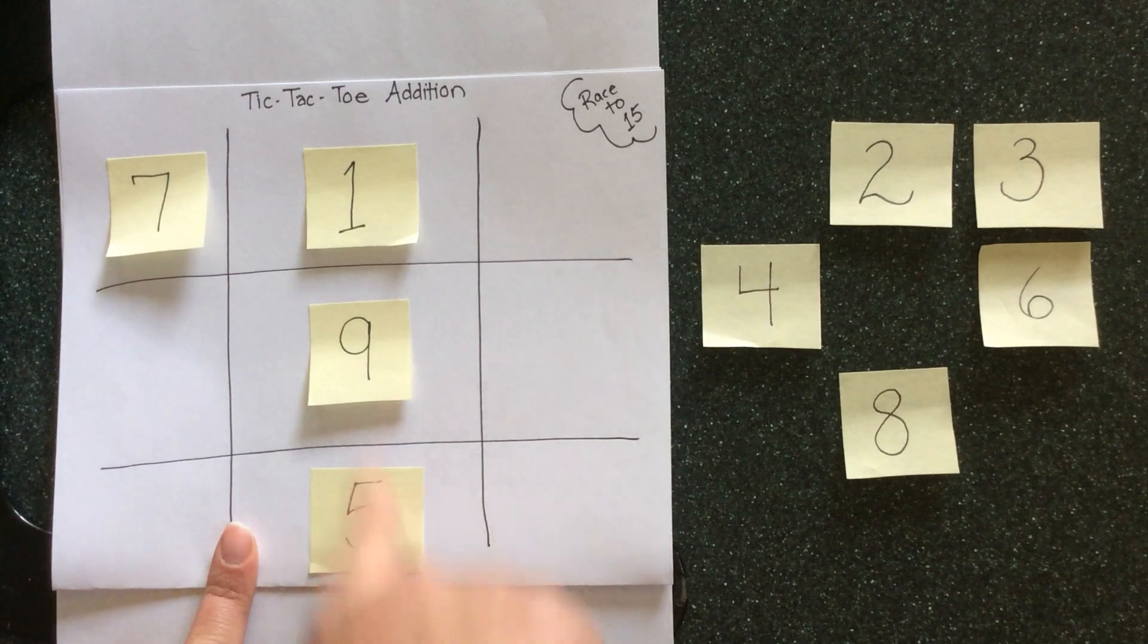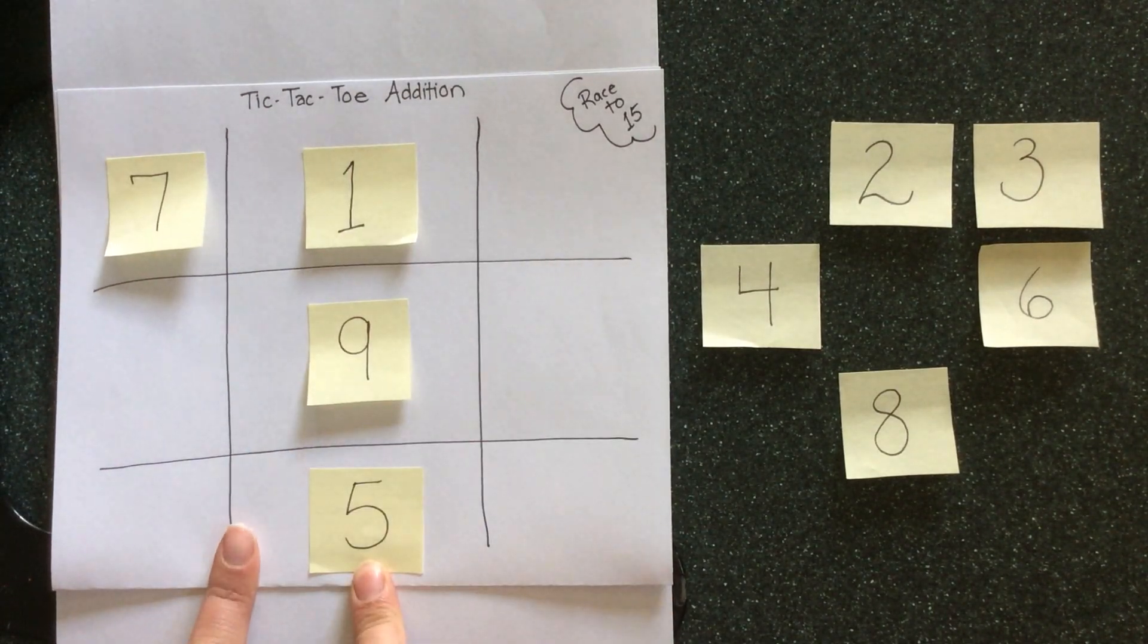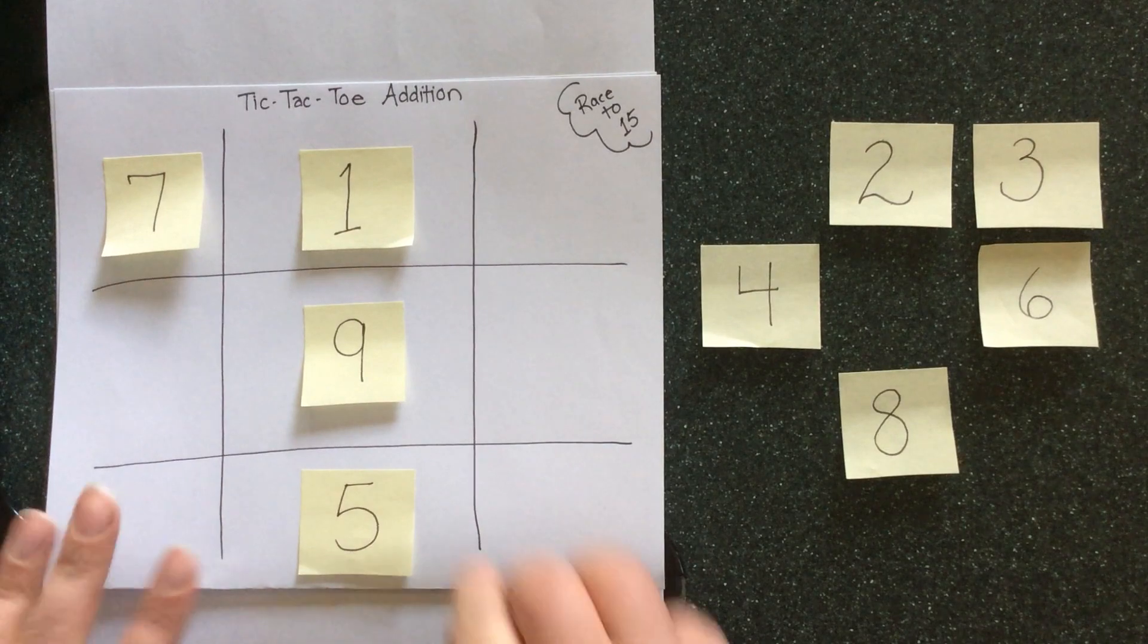So there we go, 1 plus 9 plus 5 equals 15 which means I have successfully made a row that equals 15.